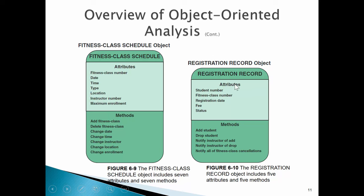A registration record object would be a single member who registered into a class. One class could be associated with many registration records, which in turn are associated with many students who registered for the class.